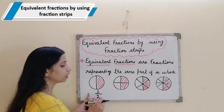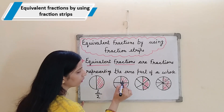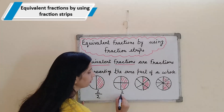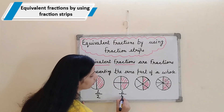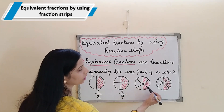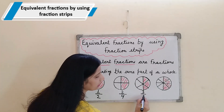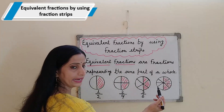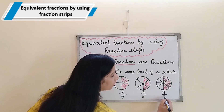And denominator tells us the total number of parts. In this circle, 2 parts are shaded, so 2 will become the numerator. And total number of parts is 4, so it will become our denominator. In the next circle, 3 parts have been shaded out of 6 equal parts, so the fraction is 3 by 6. And here, total number of parts are 8 and I have shaded 4 parts, so it will be 4 upon 8.